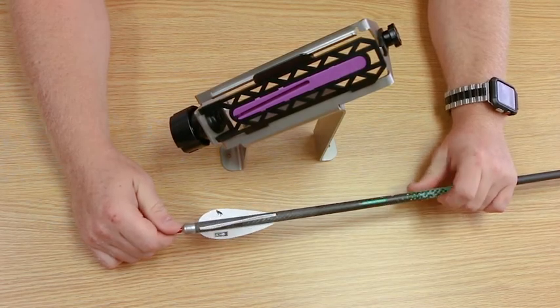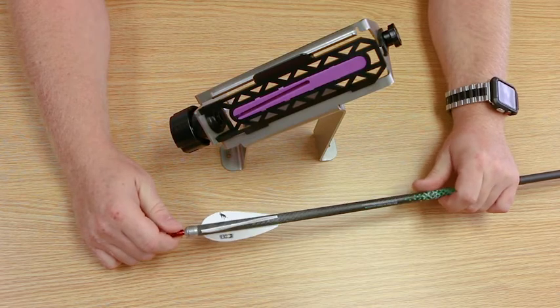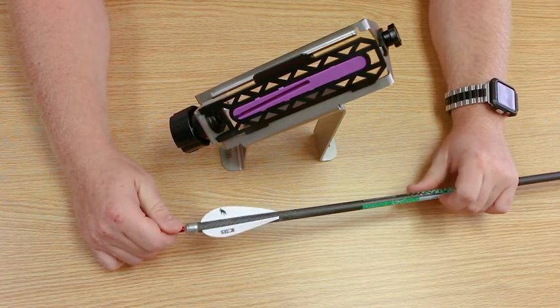Here is our completed arrow using the 3 degree left insert and our new multi-fletcher.